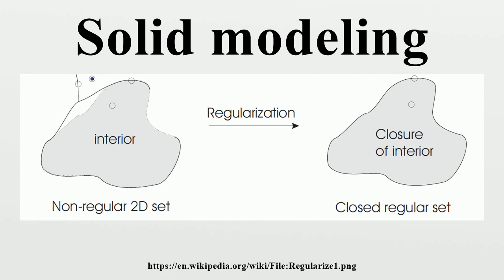For X to be considered solid, every neighborhood of any P in X must be consistently three-dimensional. Points with lower-dimensional neighborhoods indicate a lack of solidity. Dimensional homogeneity of neighborhoods is guaranteed for the class of closed regular sets, defined as sets equal to the closure of their interior. Any X in R3 can be turned into a closed regular set, or regularized, by taking the closure of its interior. Thus the modeling space of solids is mathematically defined to be the space of closed regular subsets of R3.